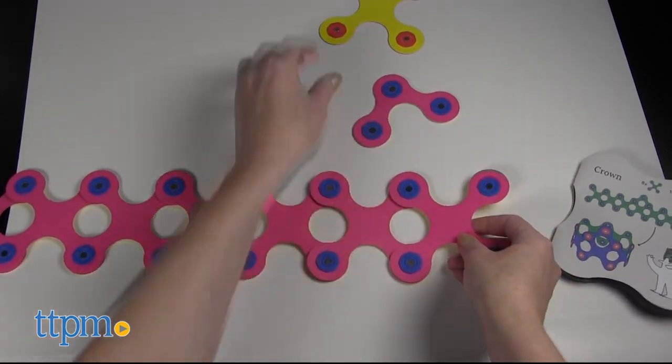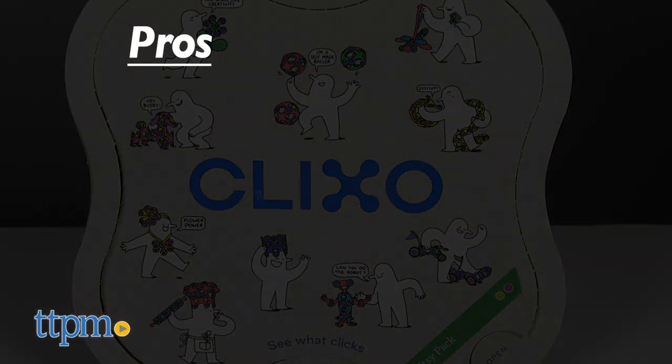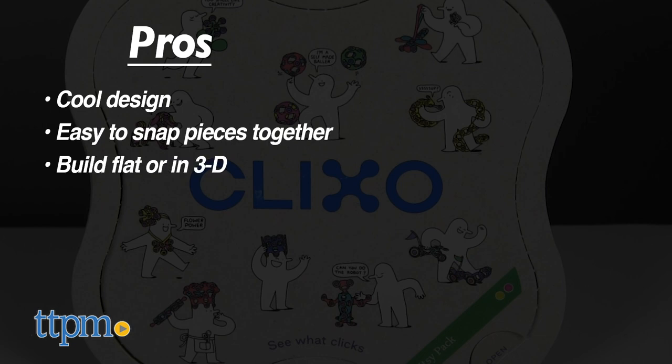I'm sure you can guess that this toy has lots of pros so here they are. Clixo has a cool design, it's easy to snap the pieces together, kids can build flat or in 3D, and kids can build whatever they want.